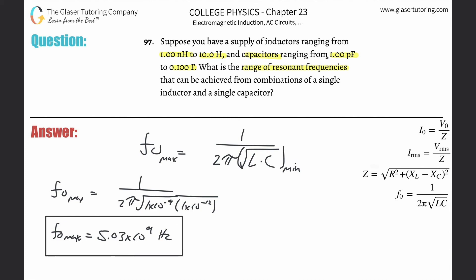How do you think the minimum is going to turn out? The frequency min will occur when this is at a max. So now you just take the maximum values. Isn't that nice and simple? The max inductance is 10, the max capacitance is 0.1.